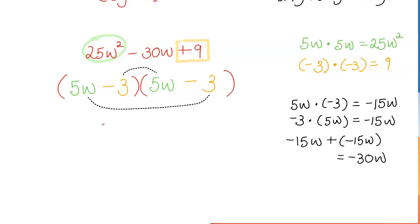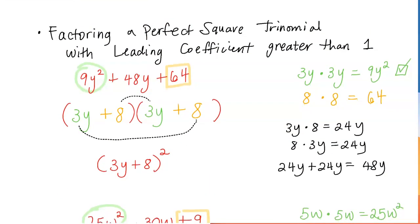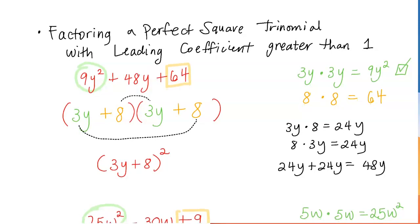So our final answer is 5w minus 3 squared. So that is how you can factor a perfect square trinomial with the leading coefficient greater than 1.